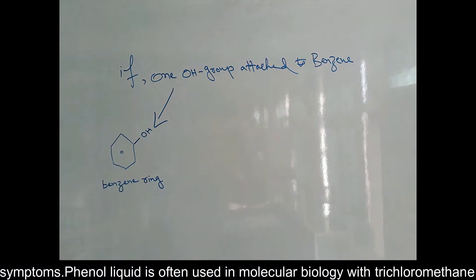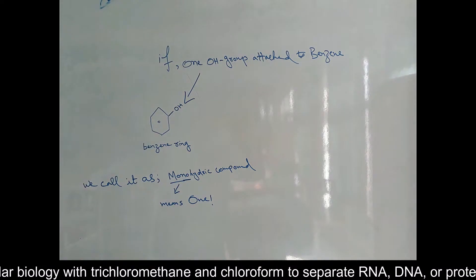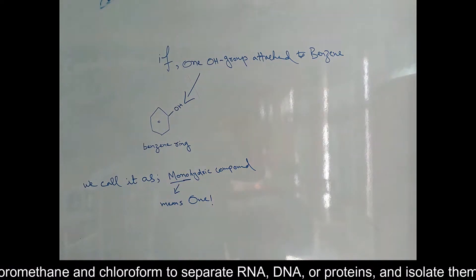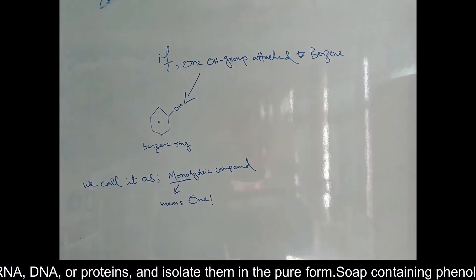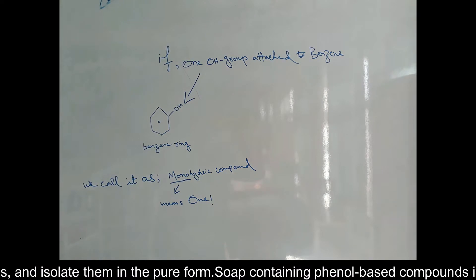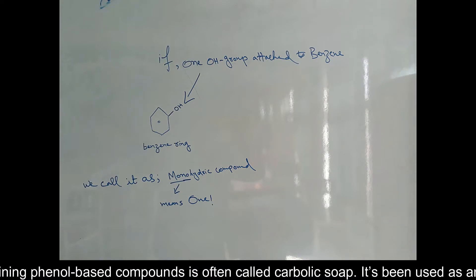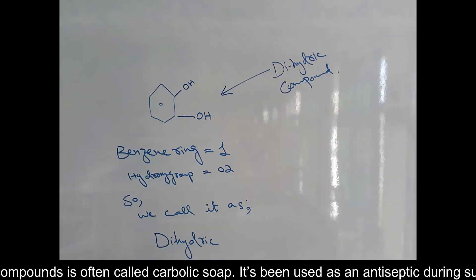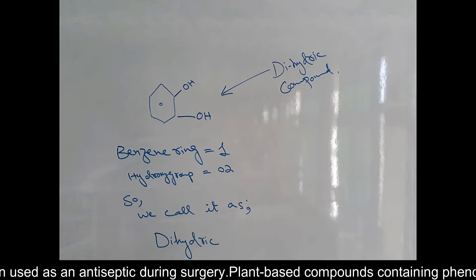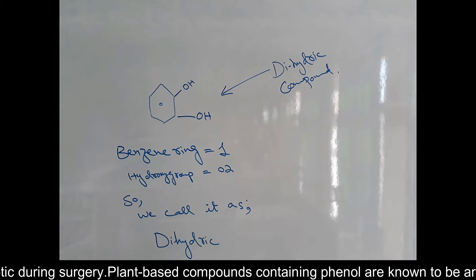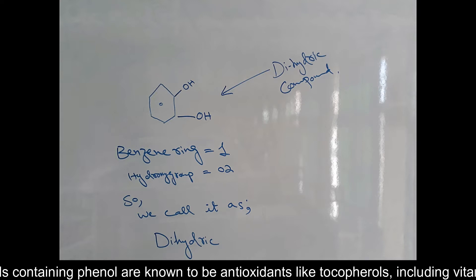The first group is monohydric phenols — benzene with one OH group attached. Monohydric means one hydroxyl group is attached. This is also known as carbolic acid. The second group has two hydroxyl groups attached — this is the dihydric group.